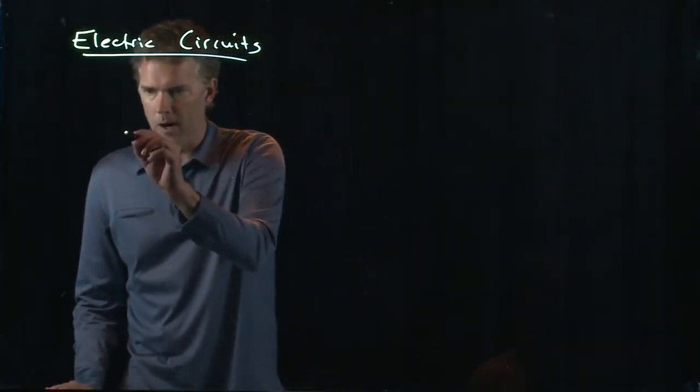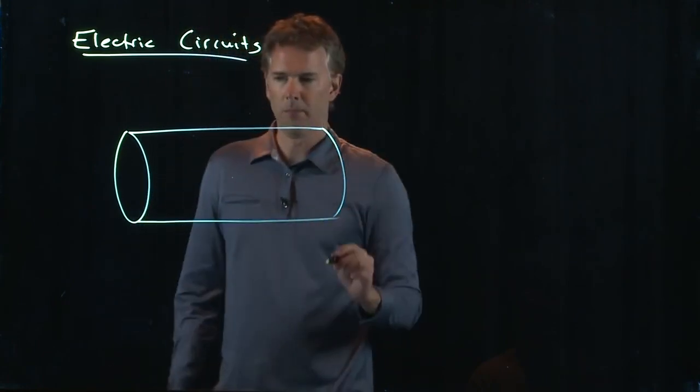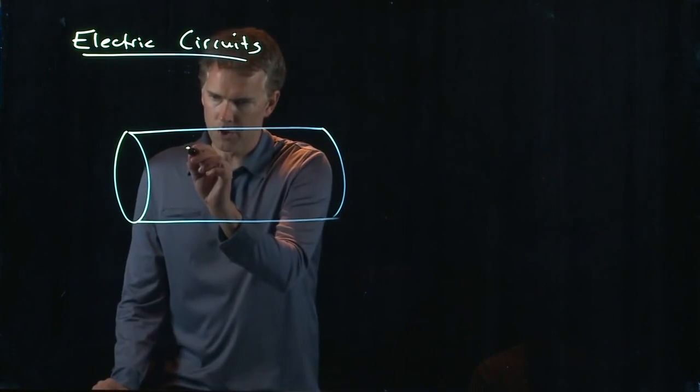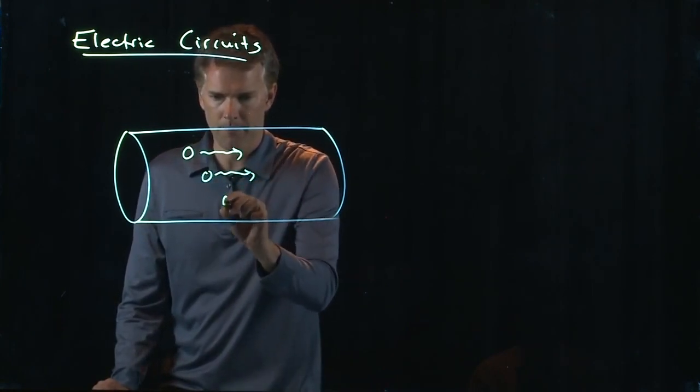Okay, let's think about a wire. What does a wire look like? A wire looks like this. It's a big chunk of metal, cylindrical in shape. We've got these charges that are going to move down the wire.